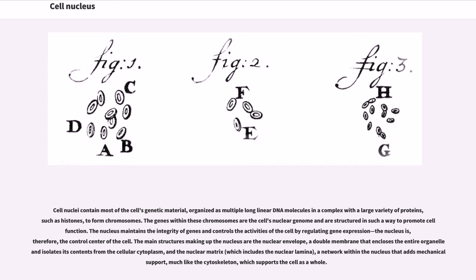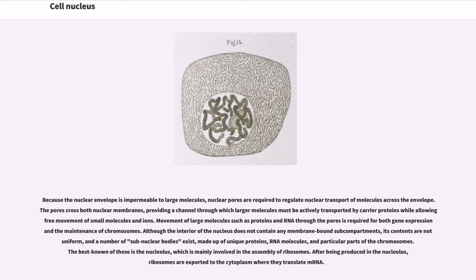The nucleus maintains the integrity of genes and controls the activities of the cell by regulating gene expression. The nucleus is, therefore, the control center of the cell. The main structures making up the nucleus are the nuclear envelope, a double membrane that encloses the entire organelle and isolates its contents from the cellular cytoplasm, and the nuclear matrix, which includes the nuclear lamina, a network within the nucleus that adds mechanical support, much like the cytoskeleton, which supports the cell as a whole.